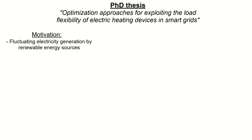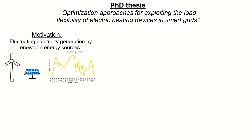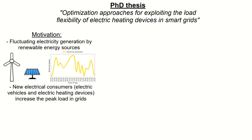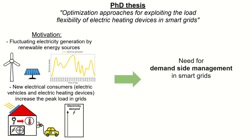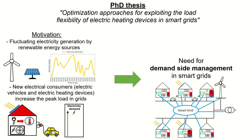The motivation for this is that we have a fluctuating electricity generation by renewable energy sources like solar and wind energy. Furthermore, we have new electrical consumers like electric vehicles and electric heating devices which increase the peak loads in the electricity grid. So there's a need for demand-side management in smart grids, and in a previous video I showed that in more detail — you can find that in the info box.